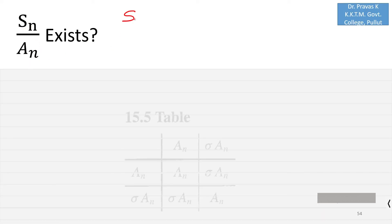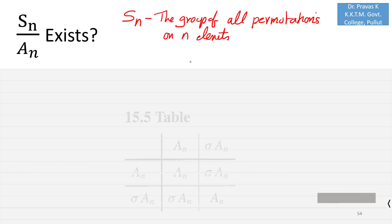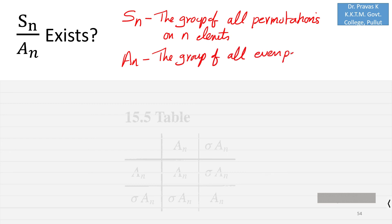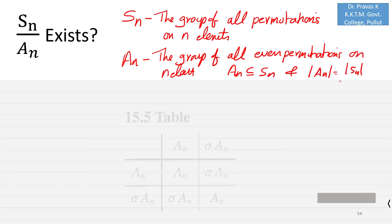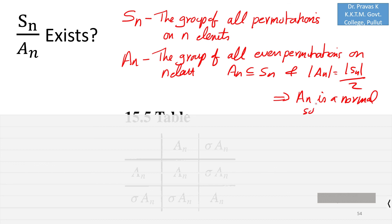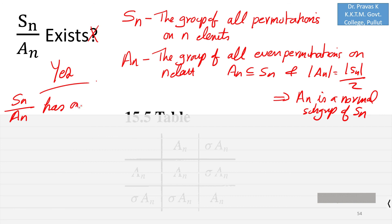We now consider whether Sn over An exists. Sn is the group of all permutations on n elements, and An is the group of all even permutations on n elements. An is a subgroup of Sn containing half its elements, so by the previous result An is a normal subgroup of Sn. Therefore Sn over An exists. Since An contains half the elements, Sn over An has exactly two elements and is isomorphic to Z2.